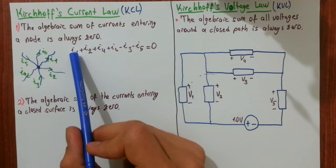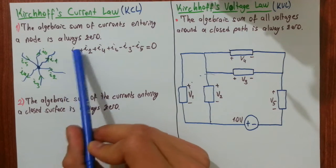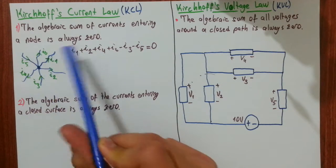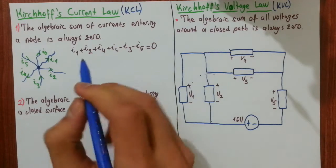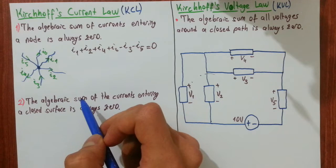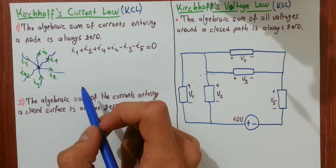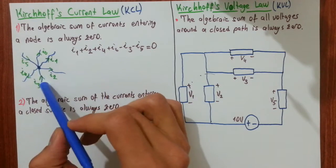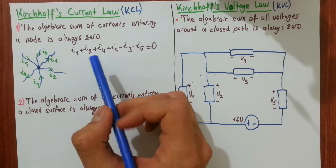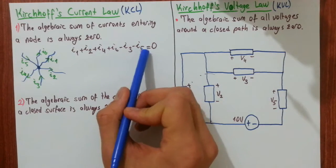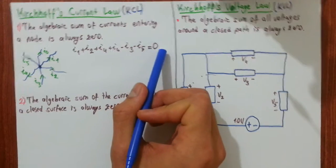Let's sum the leavings: I1, I2, I4, and I6 are leaving — we take these as plus. So we must take the entering currents as minus. I3 and I5 are entering the node, so we include them as minus I3 and minus I5. This whole expression equals zero by KCL.